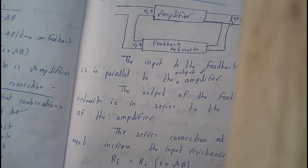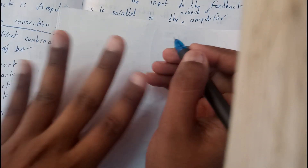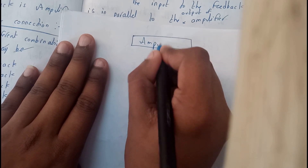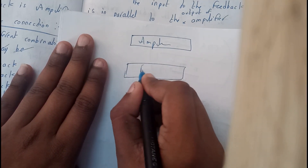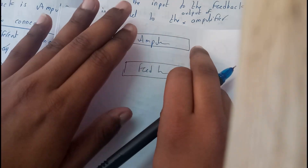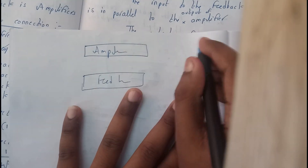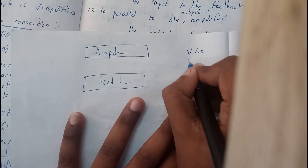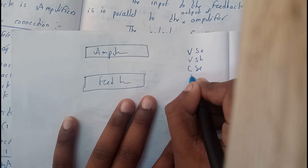In all four types of connections, we will be having an amplifier and a feedback network. These two are connected in series or parallel. The order is: voltage series, voltage shunt, current series, current shunt.